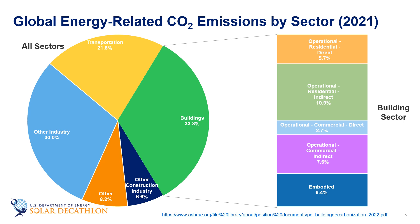Indirect emissions are emissions that occur elsewhere, not at the building, but are emitted because of the building needing energy. An example is electricity generation — using electricity at the building doesn't generate any emissions at the building. However, emissions are generated at the power plant burning fossil fuels. Emissions are also released from the transportation of the fuels, processing those fuels, and the extraction process for gathering the fuels. It also includes the emissions associated with electricity that is lost between the power plant and the building. In most residential and commercial buildings, indirect emissions make up the larger portion of the operational emissions.